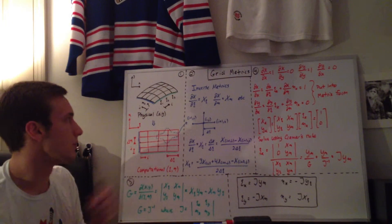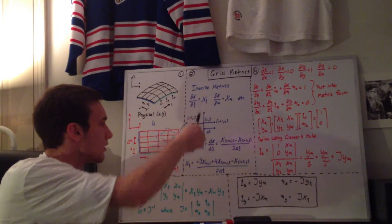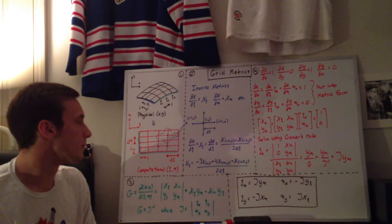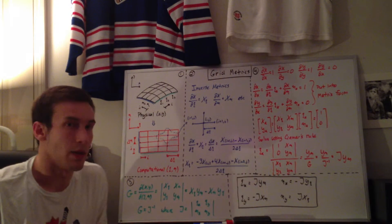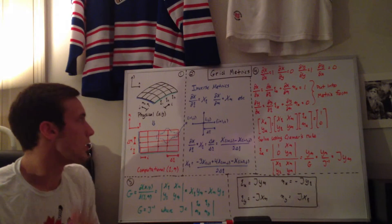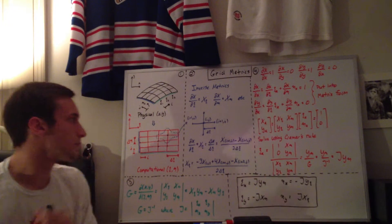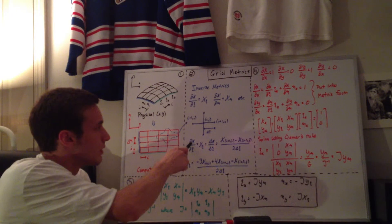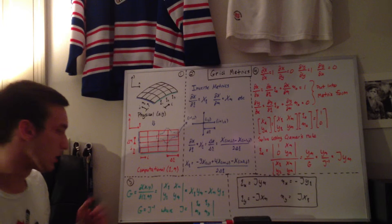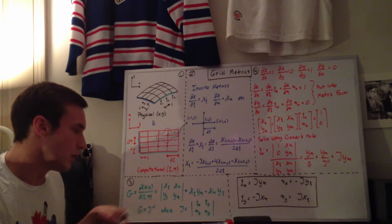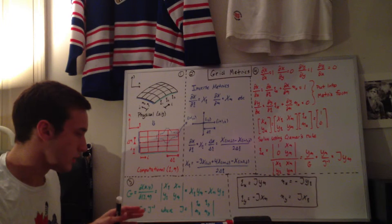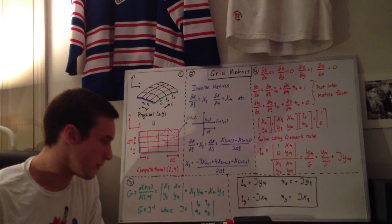Those are the inverse metrics. After calculating all this, at every single point in the computational domain we have four inverse metrics of the transformation: x_z, x_eta, y_z, y_eta. For the y terms, you just use y's instead of x's in the same formulas. Now we have the inverse metrics for the whole grid.